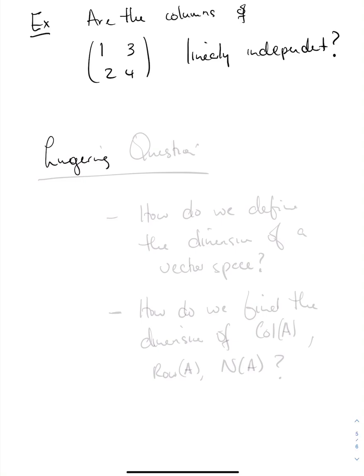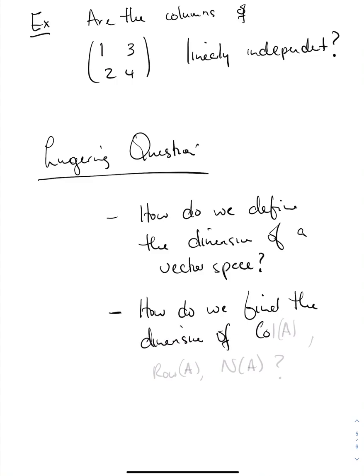You should have some lingering questions from this, some of which I kind of laid up. How do we define the dimension of a vector space? In particular, how do we find the dimension of the column space of a matrix A, the row space of a matrix A, or the null space of a matrix A? Think on this. More on this later. See you next time. Bye.